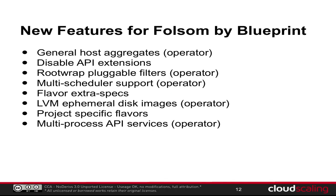While we're talking about new things in Folsom, here is a breakdown of the main features by Blueprint. We use Launchpad to track progress on major features, and a new feature is called a Blueprint. The new one I worked on myself is General Host Aggregates, which allows you to assign metadata to compute nodes that can be used in scheduling. For example, you can say this compute node should run Windows VMs and schedule all your Windows VMs on one or two nodes instead of spreading them out everywhere.